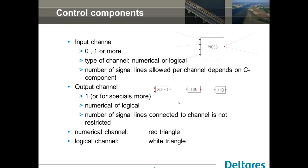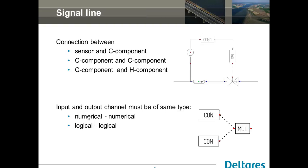A good thing to note is that in the control components, all the red connection points are numerical channels, and all the white connection points are logical channels. Of course, you should connect a numerical input to a numerical output, and a logical to a logical. Otherwise we basically don't know what should be happening, and if you try to, you get an error message that you're connecting the wrong type of output channels to the wrong input channel. The signal lines basically connect the different control components together - a sensor to a control component, a control component to another control component, and also a control component to an active hydraulic component.